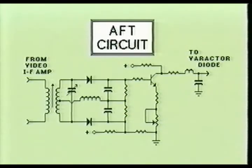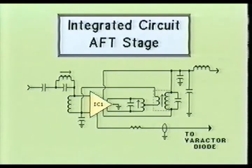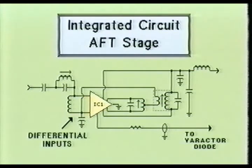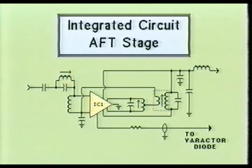Whenever the local oscillator or tuner drifts off frequency, the video IF amplifier will reflect this change and the Foster-Sealy discriminator will respond by generating an error voltage. This error voltage is inverted, amplified, and adjusted through the common emitter circuit and fed to the varactor diode within the local oscillator stage. Integrated circuits are also used in automatic fine-tuning sections. An integrated circuit can completely replace the Foster-Sealy discriminator and the common emitter amplifier circuit. This integrated circuit not only provides error detection through its two differential inputs, but also provides proper amplification of the error voltage to the varactor diodes. This circuit may be very precisely aligned to the manufacturer specifications, even more so than the Foster-Sealy discriminator circuit.